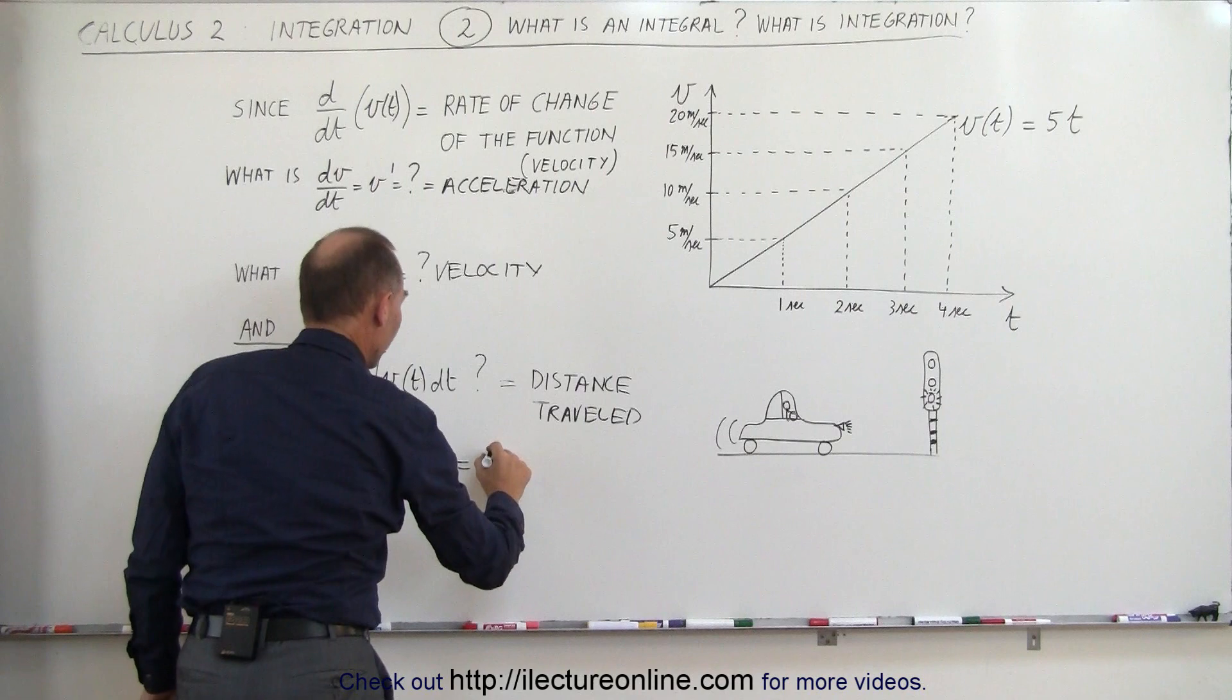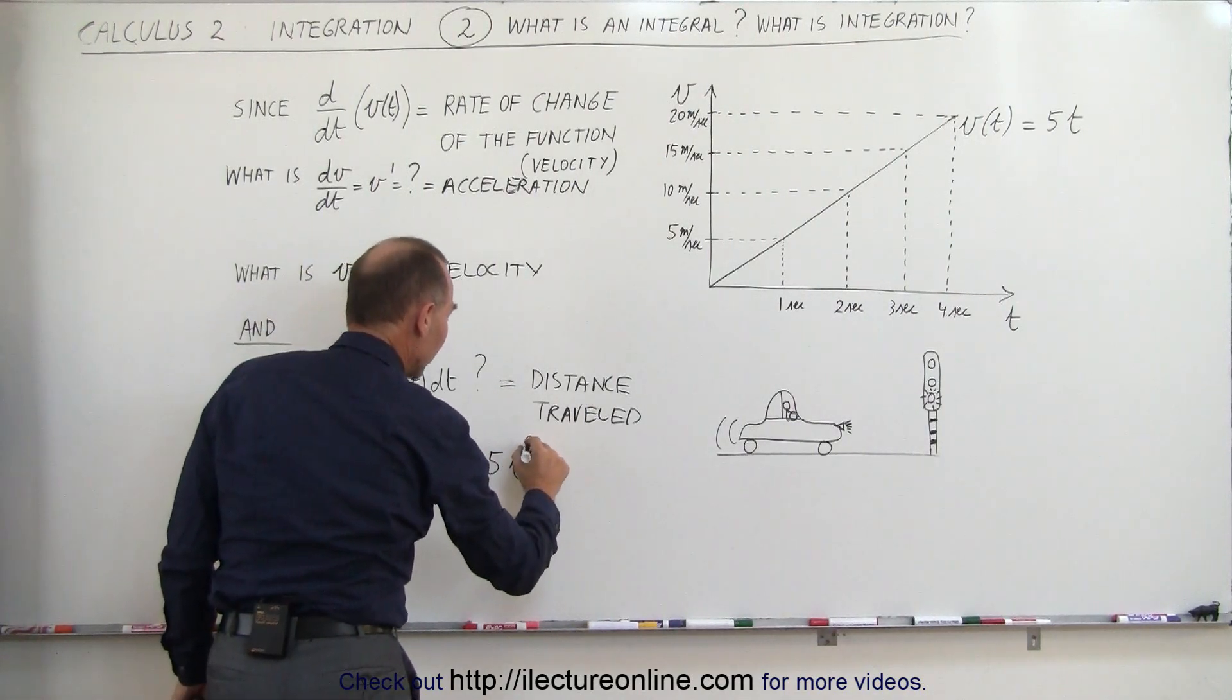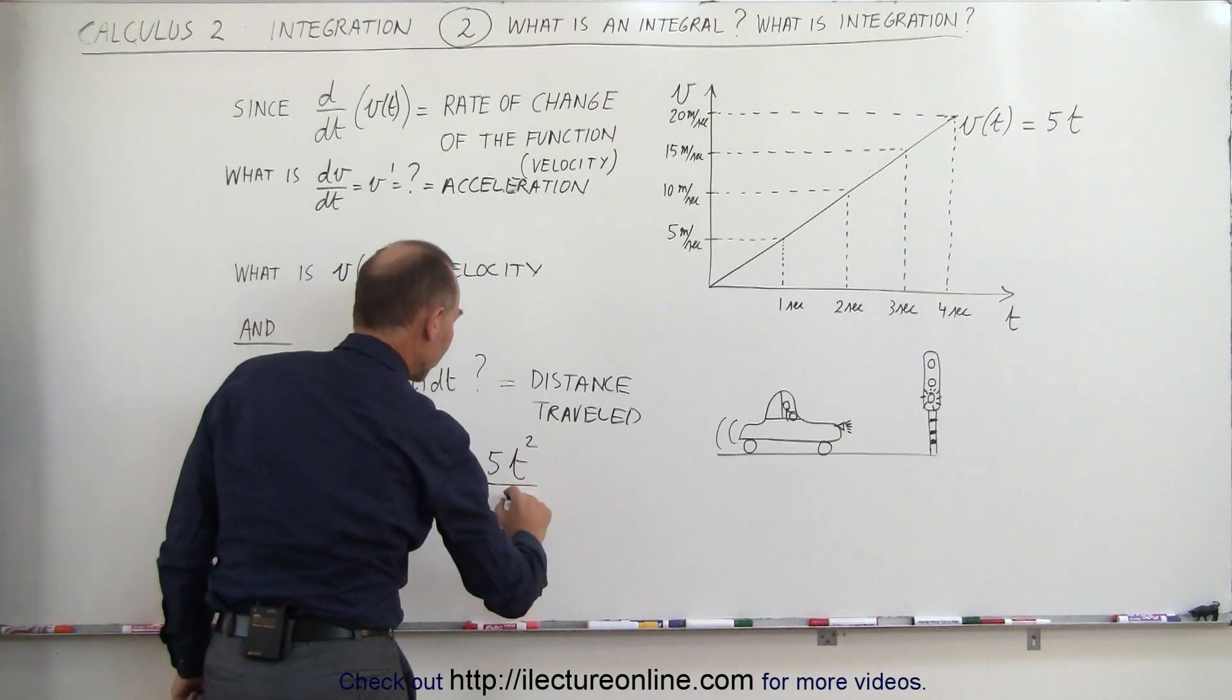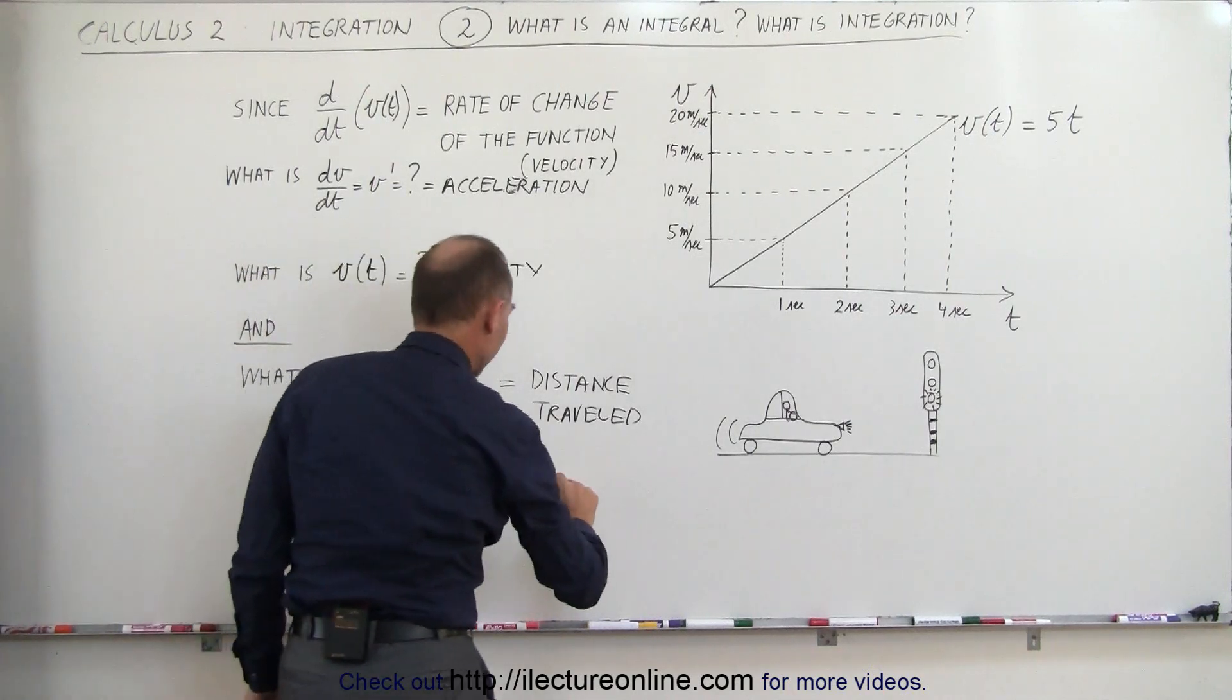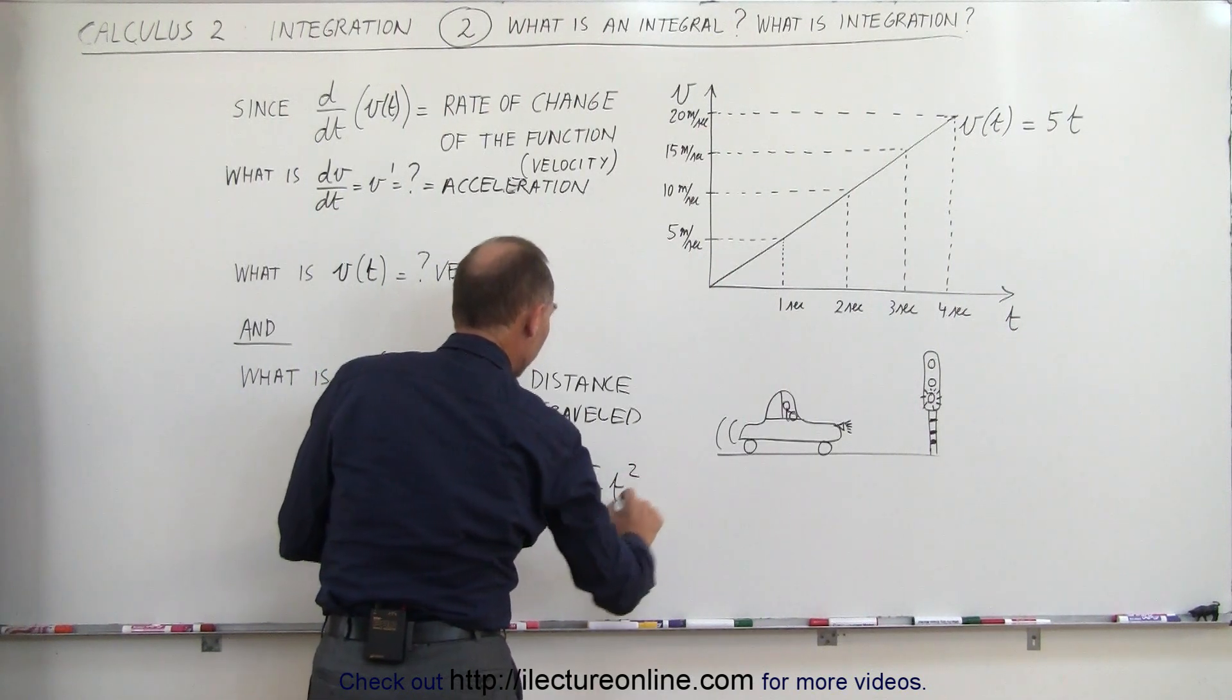This equals 5 times t. Add 1 to the exponent, which is now a 2 instead of a 1. Divide by the new exponent. Therefore, we can say that this equals 5 over 2 t squared.